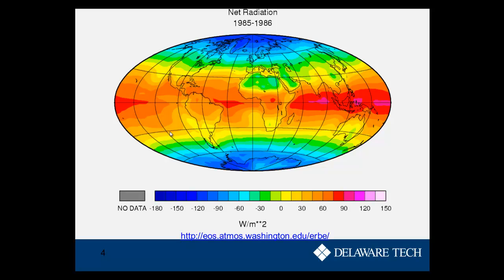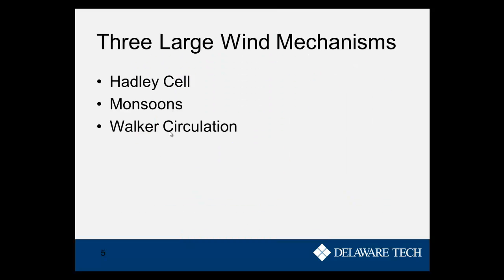We're going to talk about three large wind mechanisms in this course. The first is a Hadley cell, the second is monsoons, and the third is walker circulation. You've probably heard about monsoons before, but Hadley cell and walker circulation are less typical.